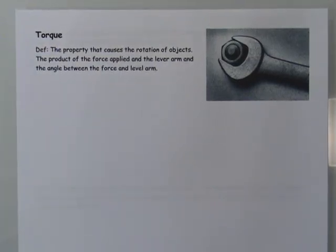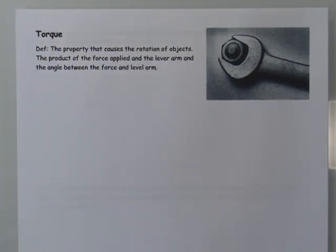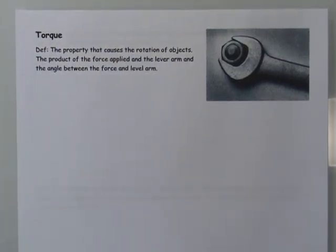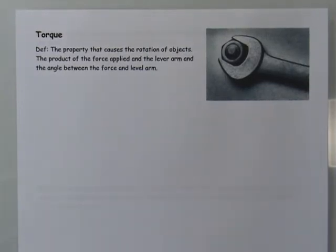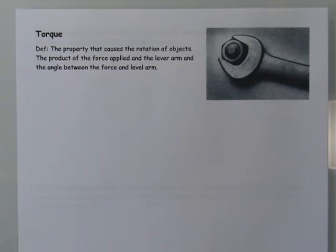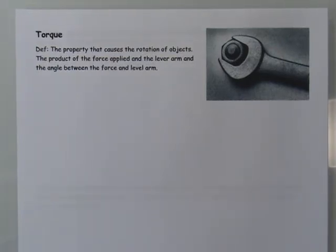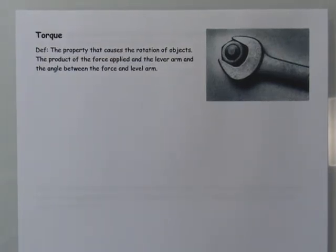In this video we're going to examine a property called torque. It's an important property for rotational motion because that's what actually causes the rotational motion. Where force causes linear motion — producing velocity or acceleration of an object — torque is what causes the rotational velocity or rotational acceleration of objects.